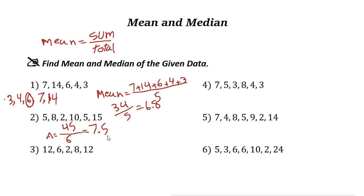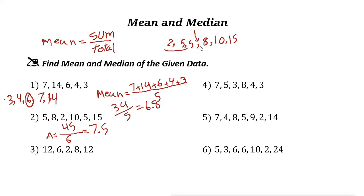To find the median, write the numbers in order: 2, 5, 5, 8, 10, 15. Since we have 6 numbers, an even count, there is no single middle number — we have two numbers in the middle. When the count is even, find the average of the two middle numbers: 5 plus 8 is 13, divided by 2 is 6.5. So the median is 6.5.